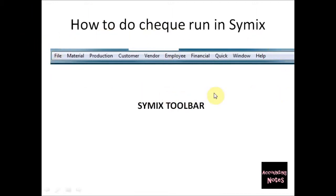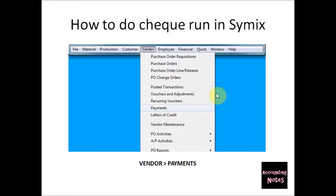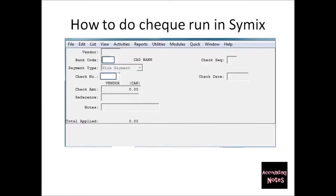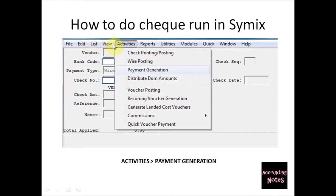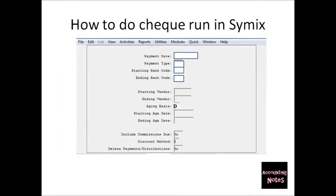Next, when you put your cursor on the menu you will see a list, and on that list you need to go to Payments — click Payments. You will see the following window when you click Payments. Next, go to Activities and click Payment Generation. You will see this following window when you click Payment Generation.